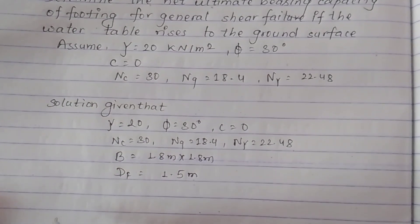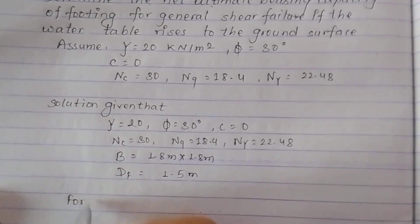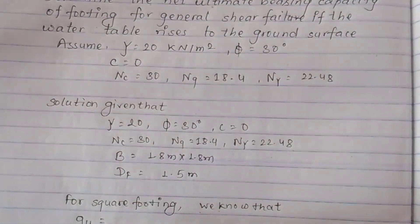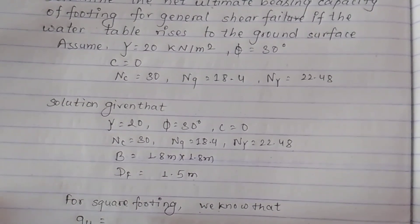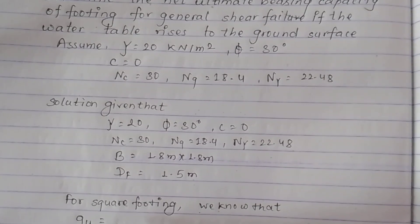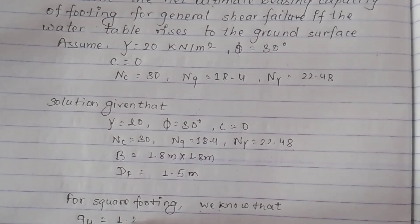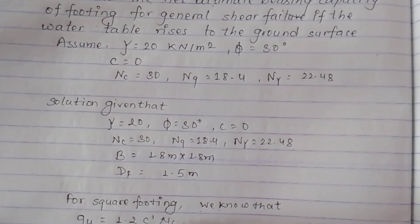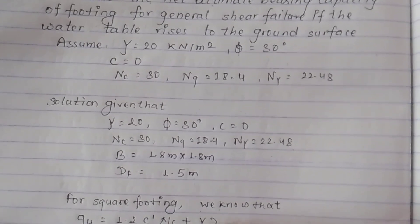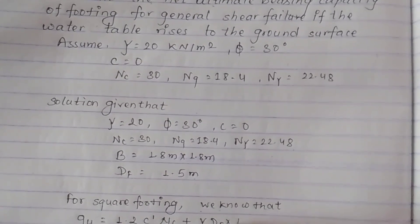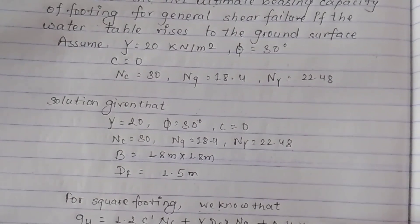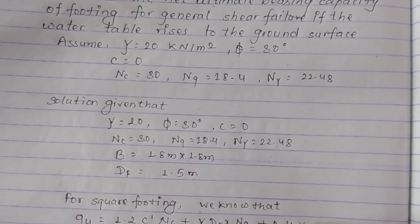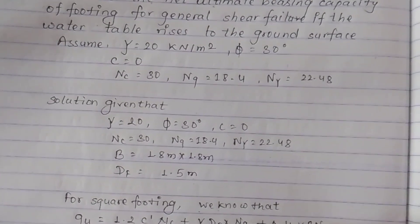For square footings, we know the formula. Formula 3 for square footings: gamma into Nq, plus 0.4 gamma B into Nγ — that is the Nγ formula component for square footing bearing capacity.